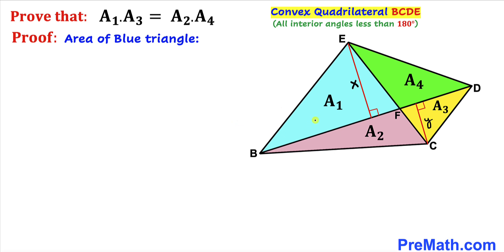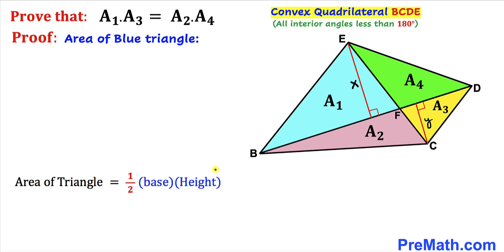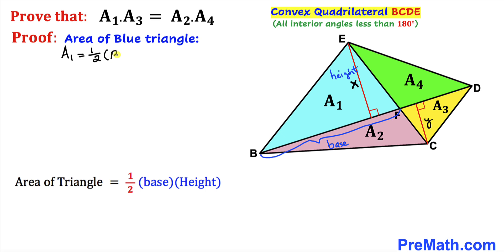Let's go ahead and calculate the area of this blue triangle. Recalling the area of a triangle formula: area equals one half times base times height. For this blue triangle the base is BF and the height is X. So the area A sub 1 equals one half times BF times X. Let's call this equation number one.